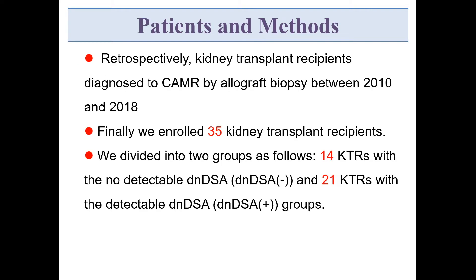We retrospectively analyzed the medical records of kidney transplant recipients who were diagnosed with CAMR by allograft biopsy between 2010 and 2018. Finally, we enrolled 35 kidney transplant recipients, divided into two groups: 14 recipients with no detectable de novo DSA and 21 recipients with detectable de novo DSA.